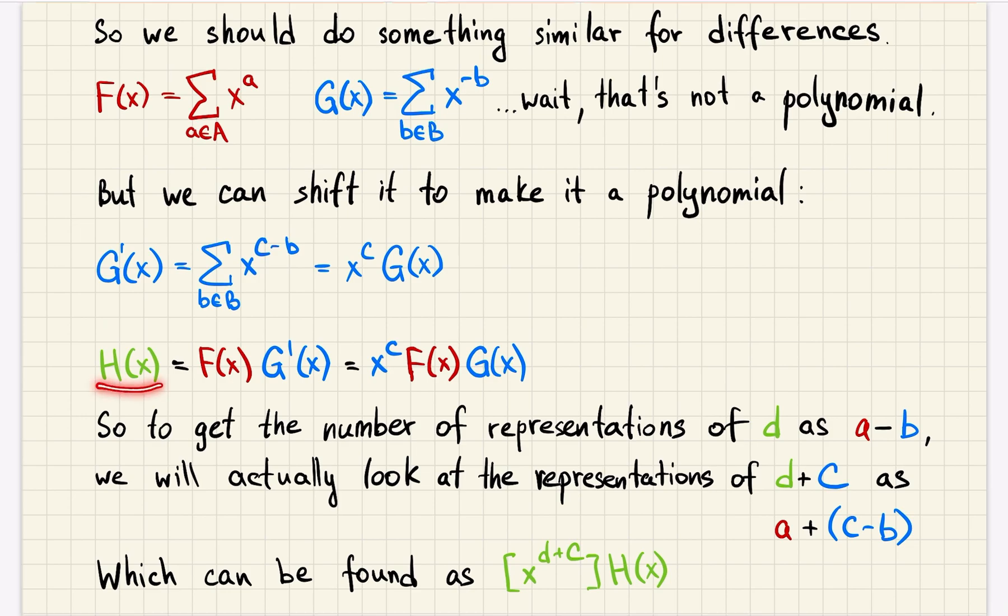It's okay to just look at this h with a product of f and g prime. And if I want to get the number of representations of d as a minus b, we will actually look at representations of number d plus c as a sum of two numbers where one is from set a and the other one is c minus b where b was from set b.